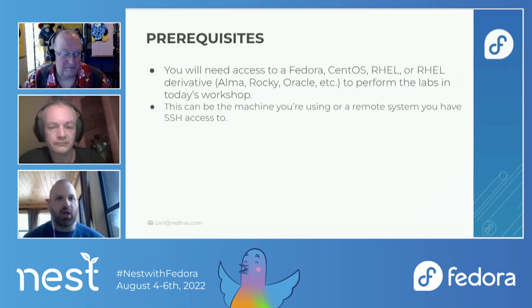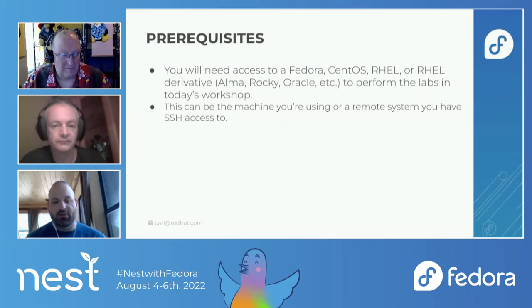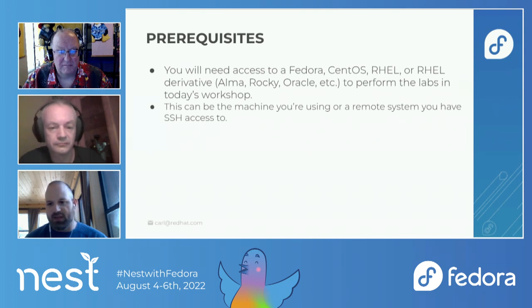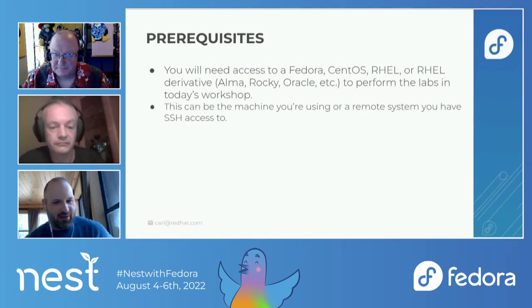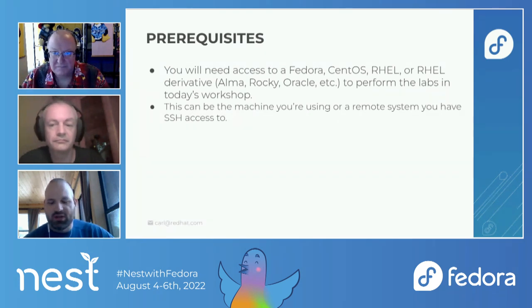Our prerequisites today: to do the labs, you'll need access to an RPM system — ideally Fedora, CentOS, RHEL, or a RHEL derivative. This can be either the system you're connecting from or a remote system like a cloud server you have SSH access into. None of the labs need anything graphical; they're all terminal-based. If you don't have access to one of these types of systems, you're still welcome to follow along and ask questions.